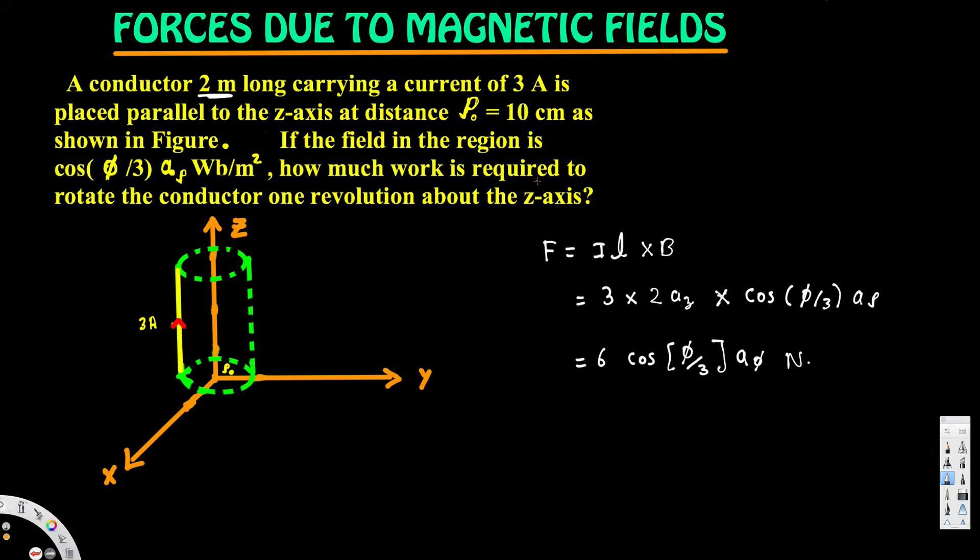Now our purpose is to find how much work is required to rotate the conductor one revolution about the z-axis. So to find the work, we have to use this equation: W equals integral. One revolution means we have to rotate one full rotation, that is 0 to 2π. So the limits of integration are 0 to 2π.